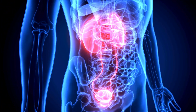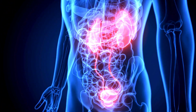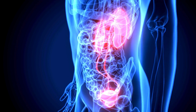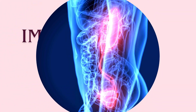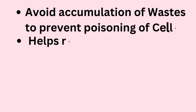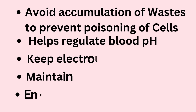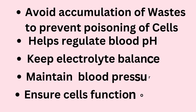The excretory system is like your body's built-in cleaning crew. Without excretion, these wastes would accumulate, resulting in poisoning cells and tissues. Excretion helps regulate blood pH, electrolyte balance, and blood pressure, ensuring our cells function optimally.